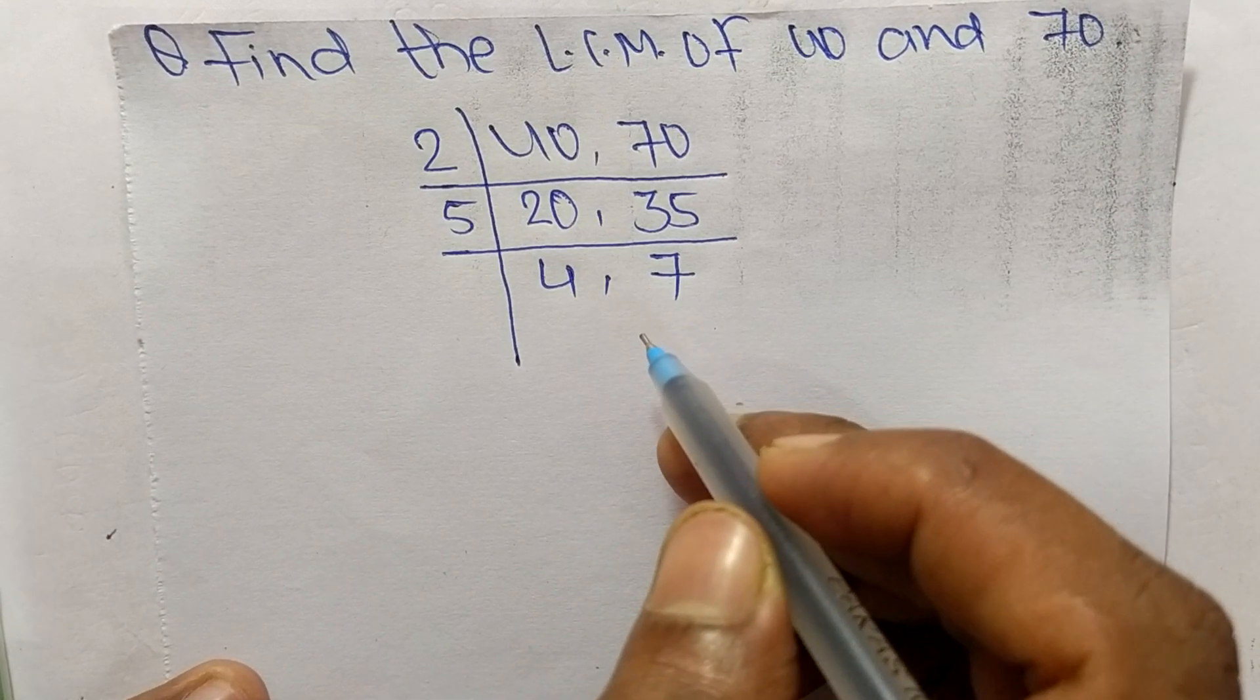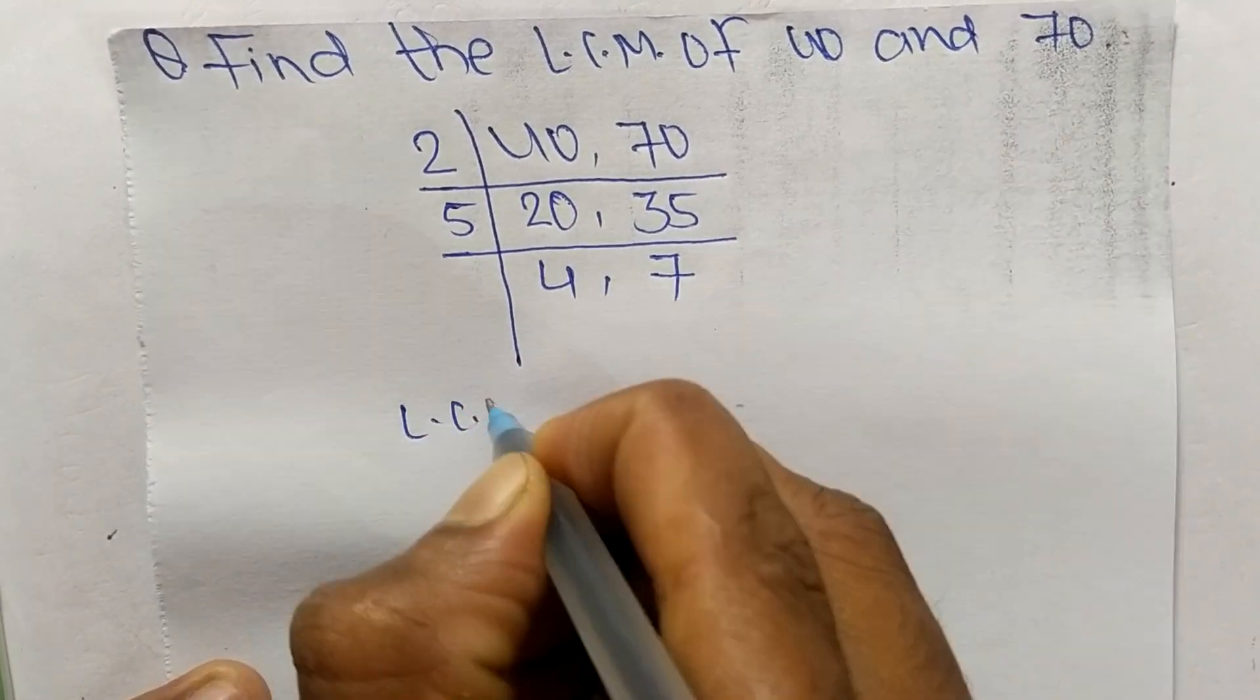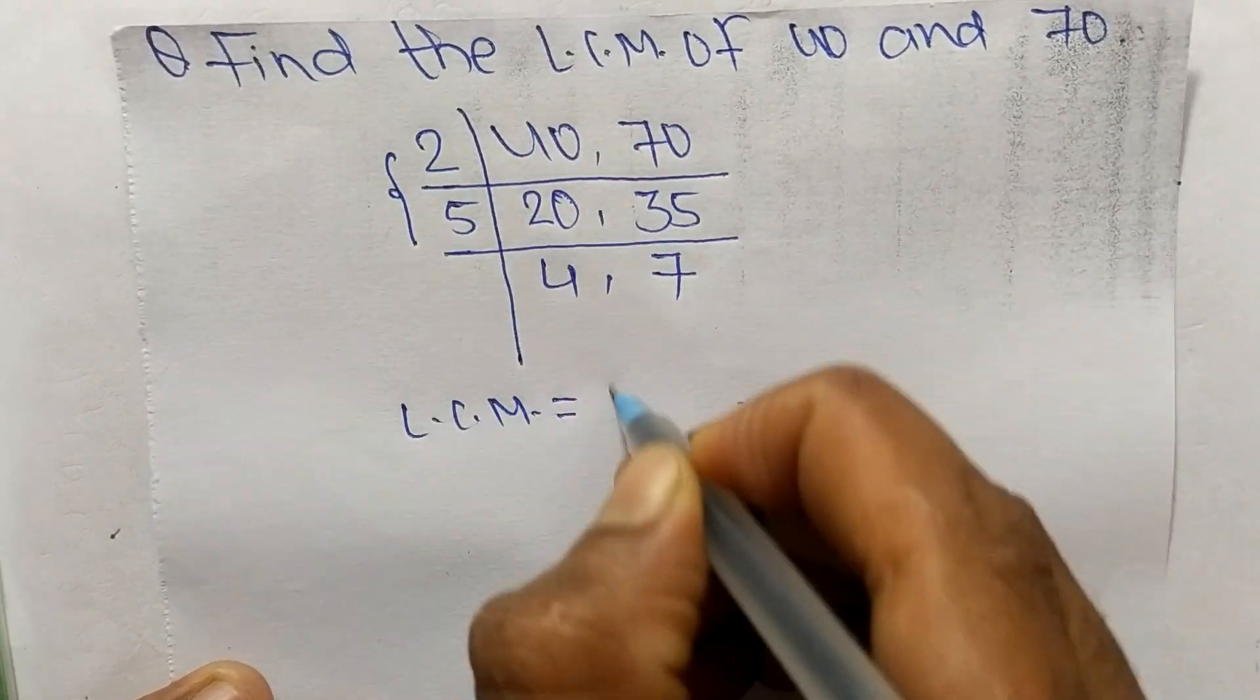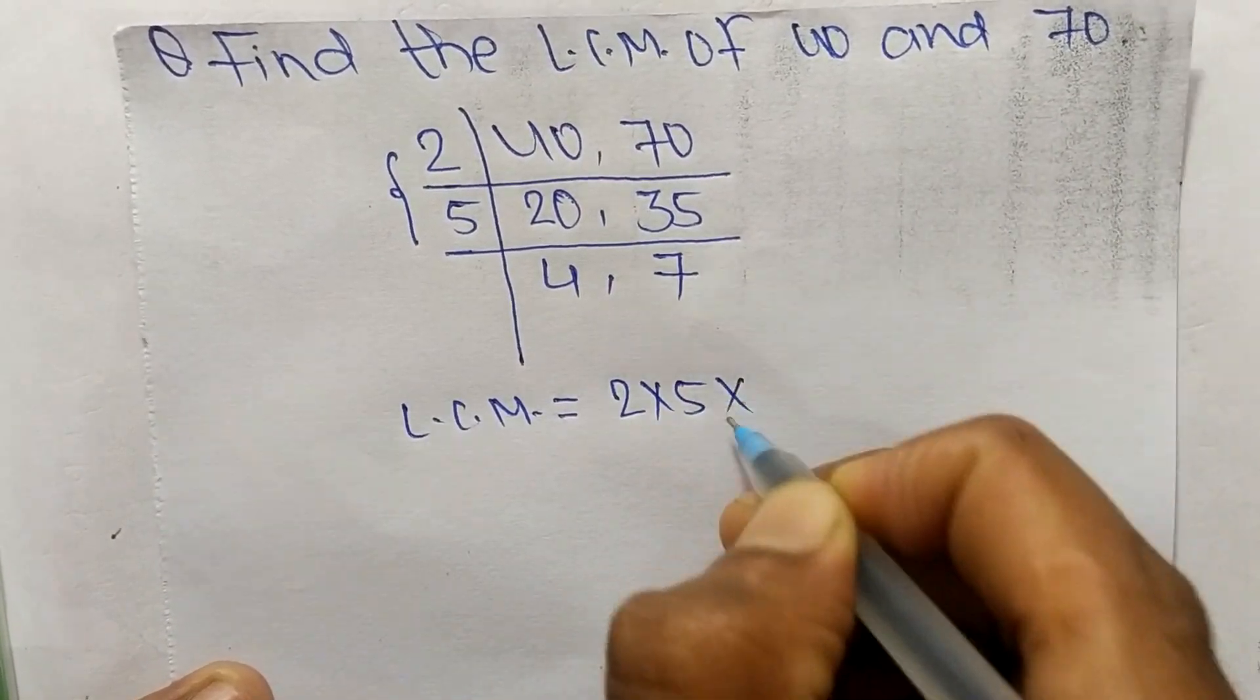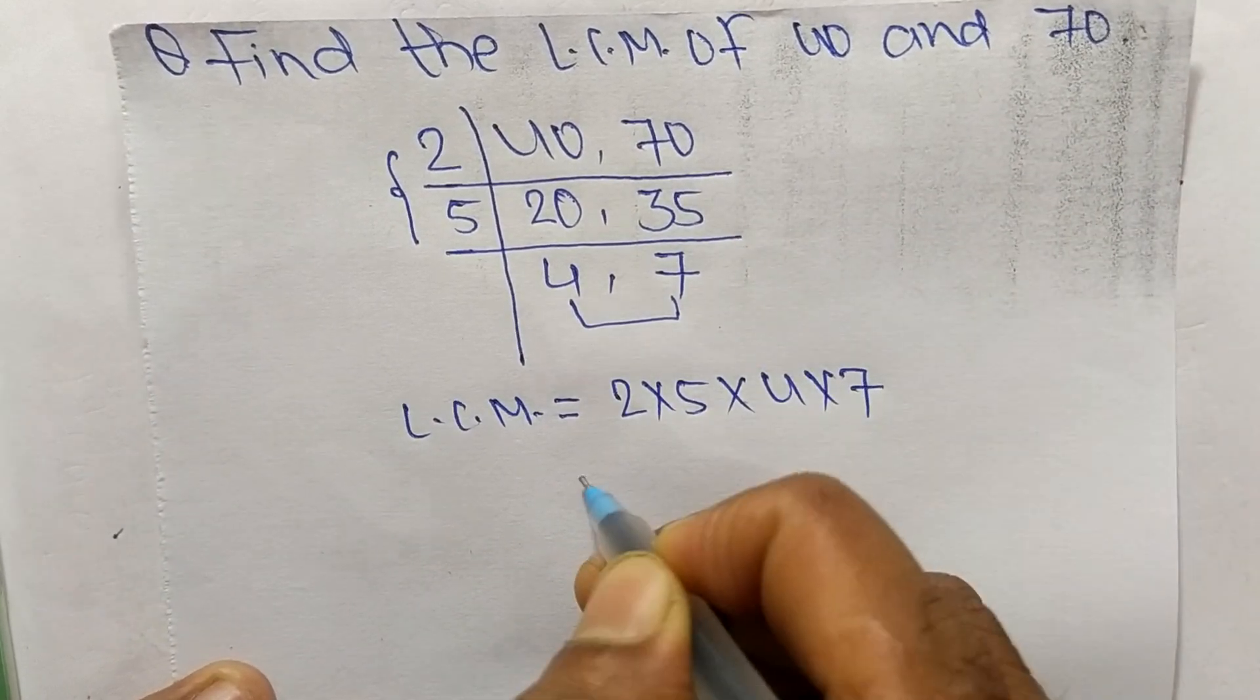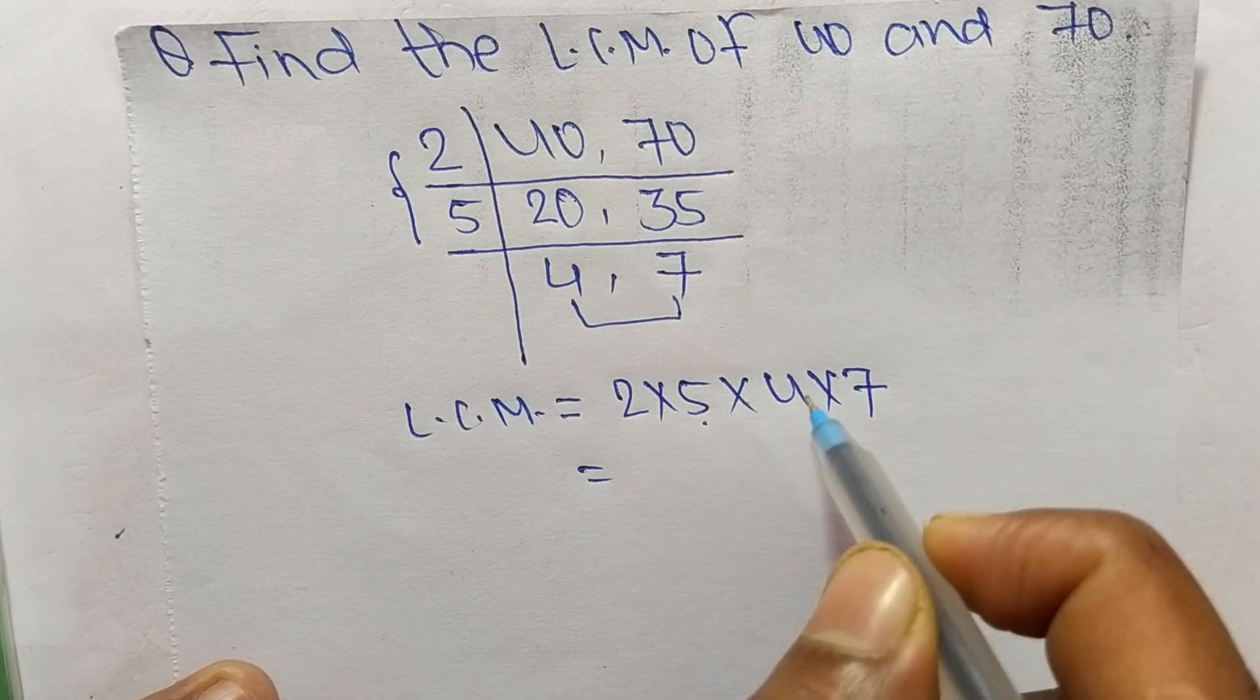Which are not exactly divisible by the same number, so its LCM is equal to: from this part it is 2 and 5, and from this part it is 4 and 7. So 2 times 5 equals 10, 10 times 4 equals 40.